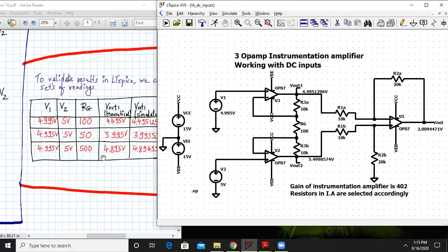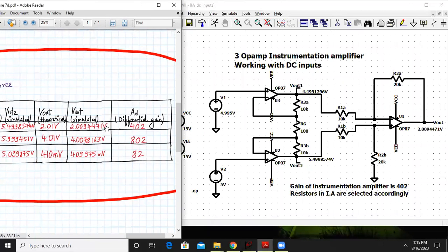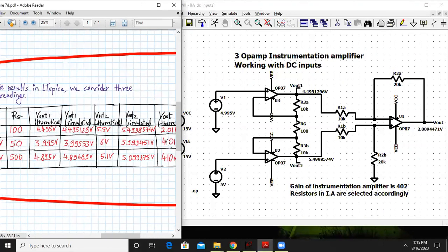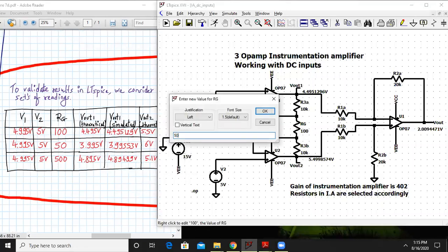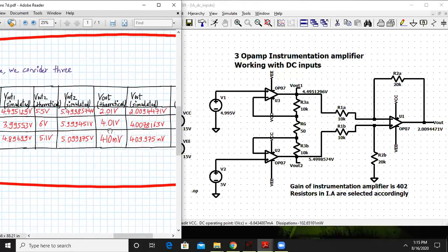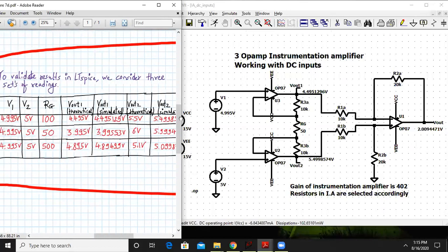Now we'll only change the value of RG and since in theory we have said that by changing RG we can change the gain tremendously. In the first case the differential gain was 402. Now if I change RG to 50 my gain will be almost doubled, it will be 802 now. Let us cross check all these values. V1 and V2 remain the same, only RG is changed.